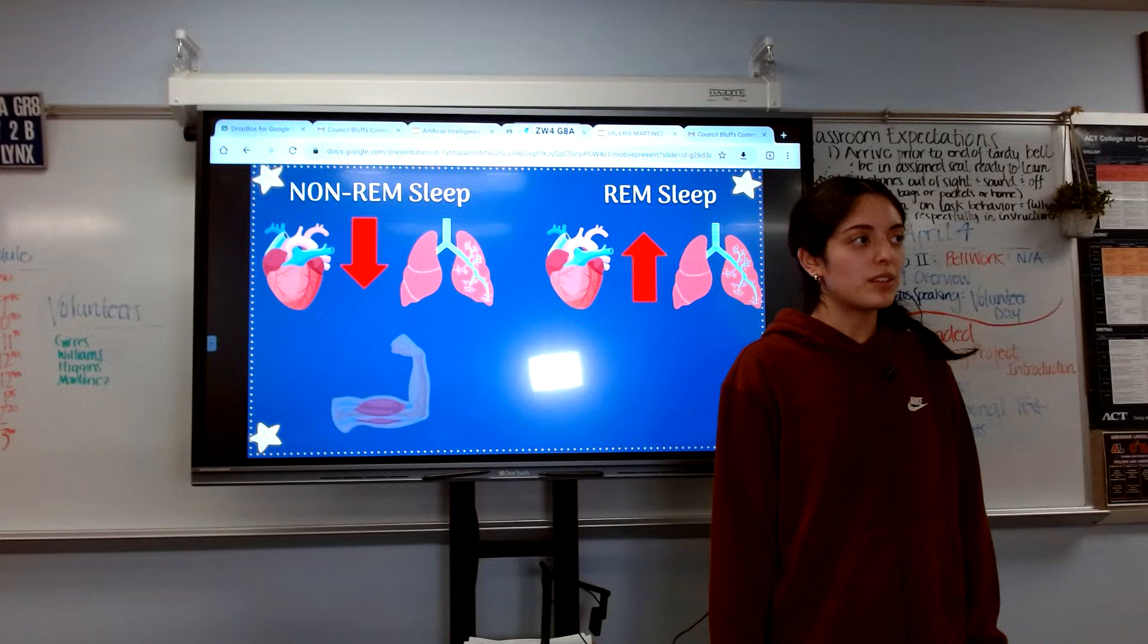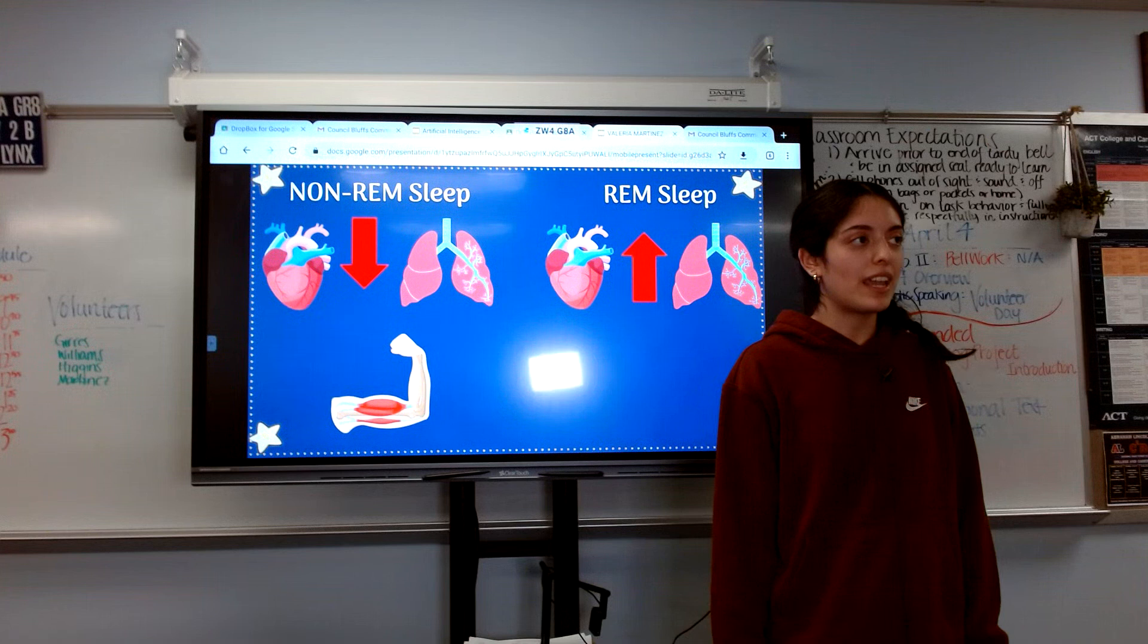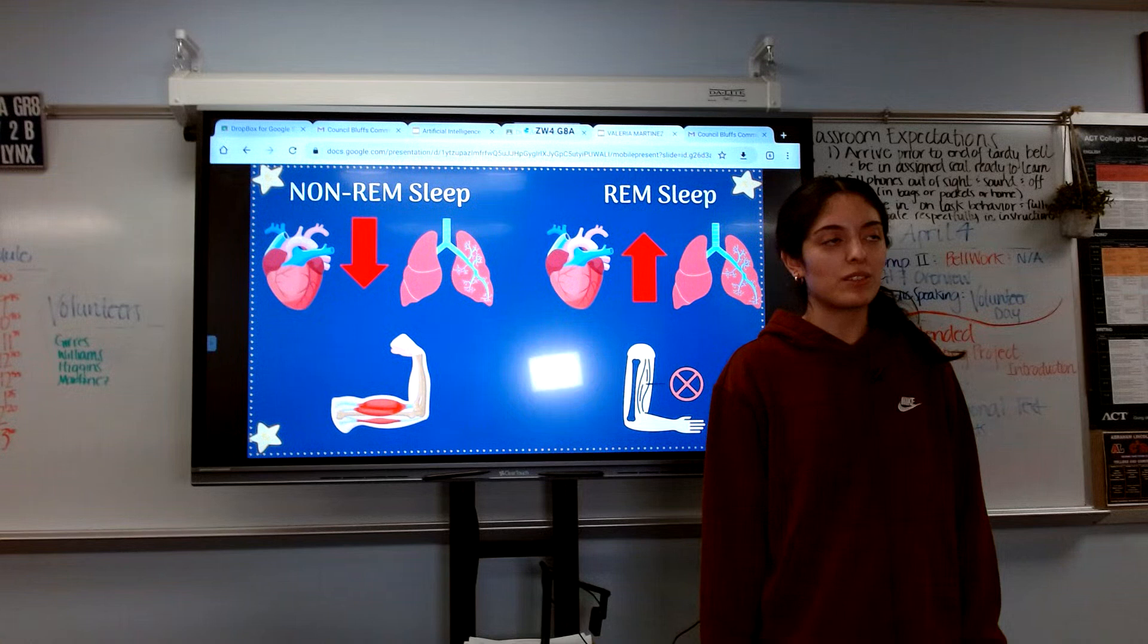Another difference is muscle tone. In non-REM sleep, our muscles are relaxed because of our low energy levels, and in REM sleep, our muscles are paralyzed because we tend to have vivid dreams and paralyzed muscles stop us from flailing our arms around and just moving while we're sleeping.